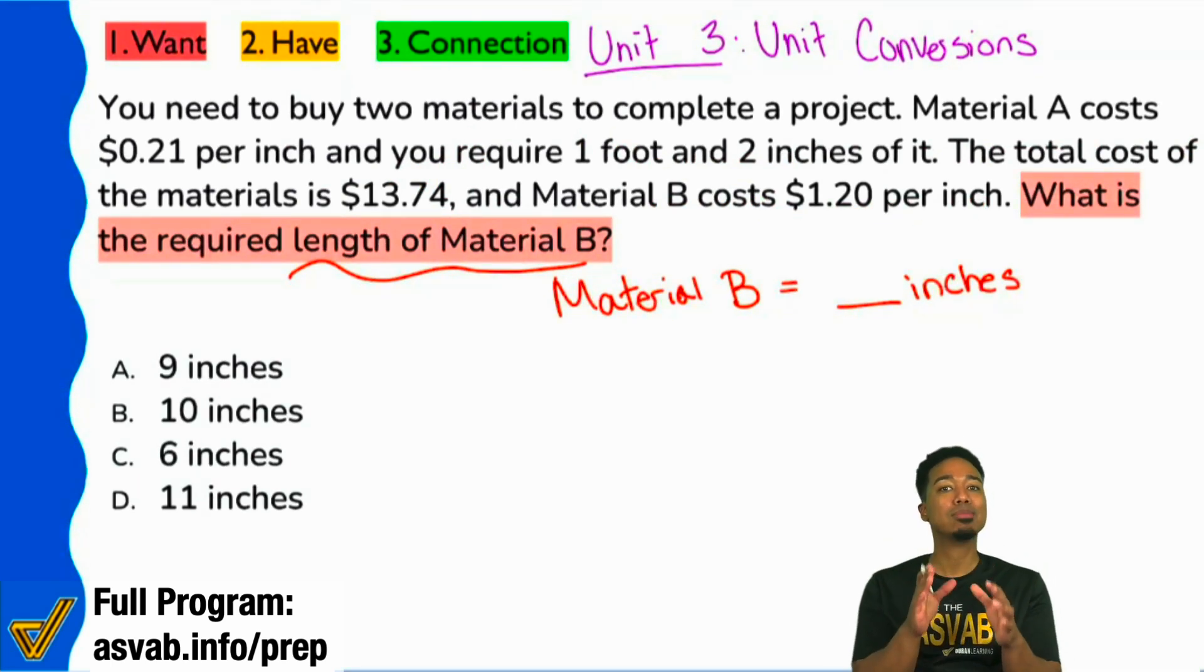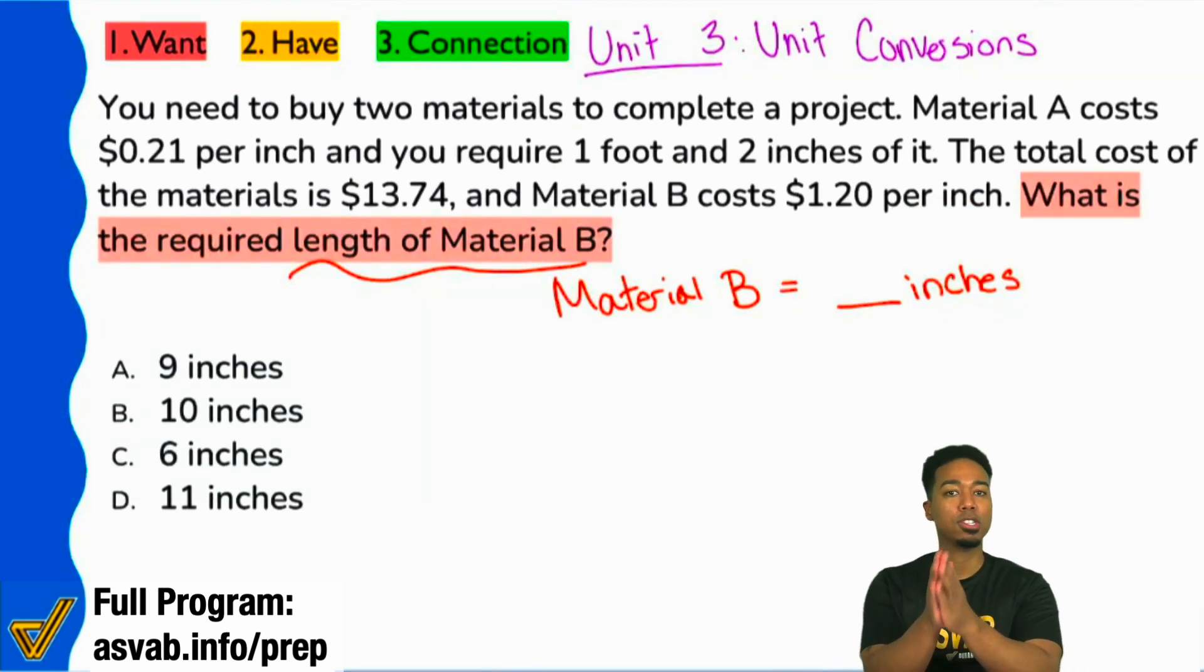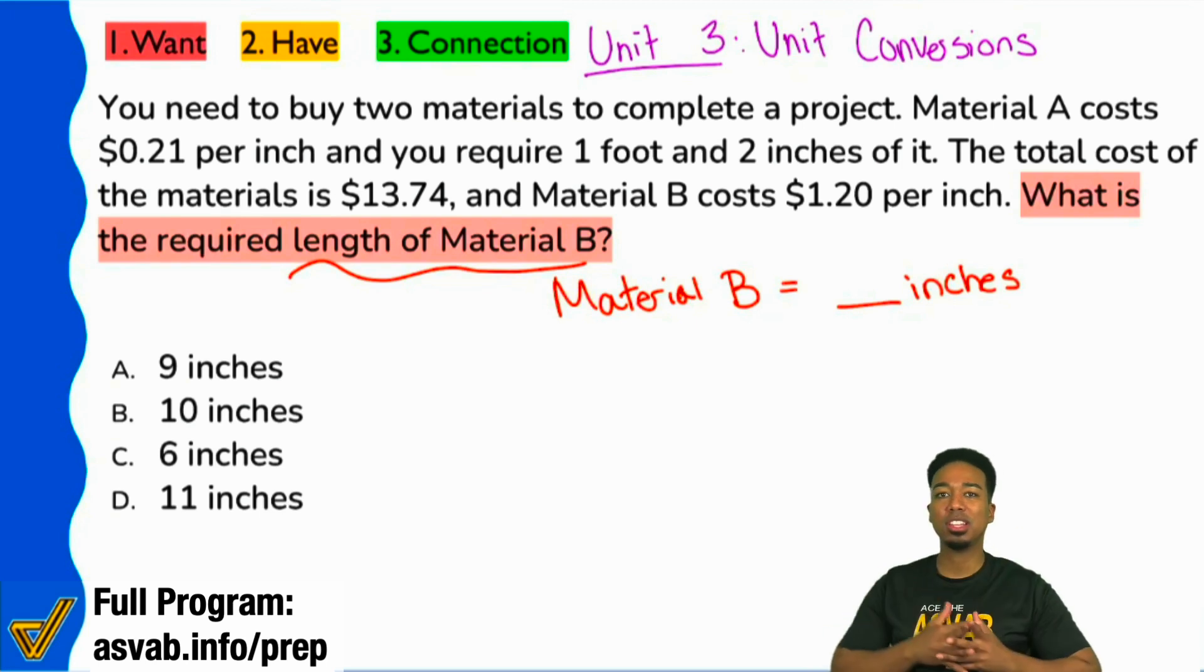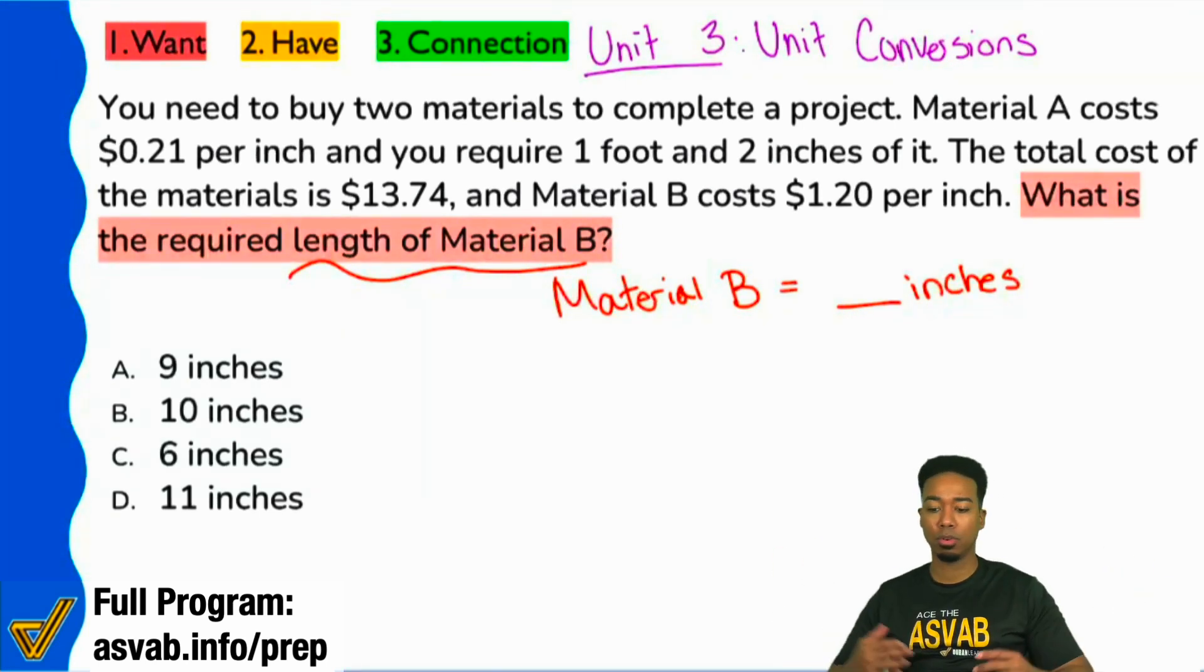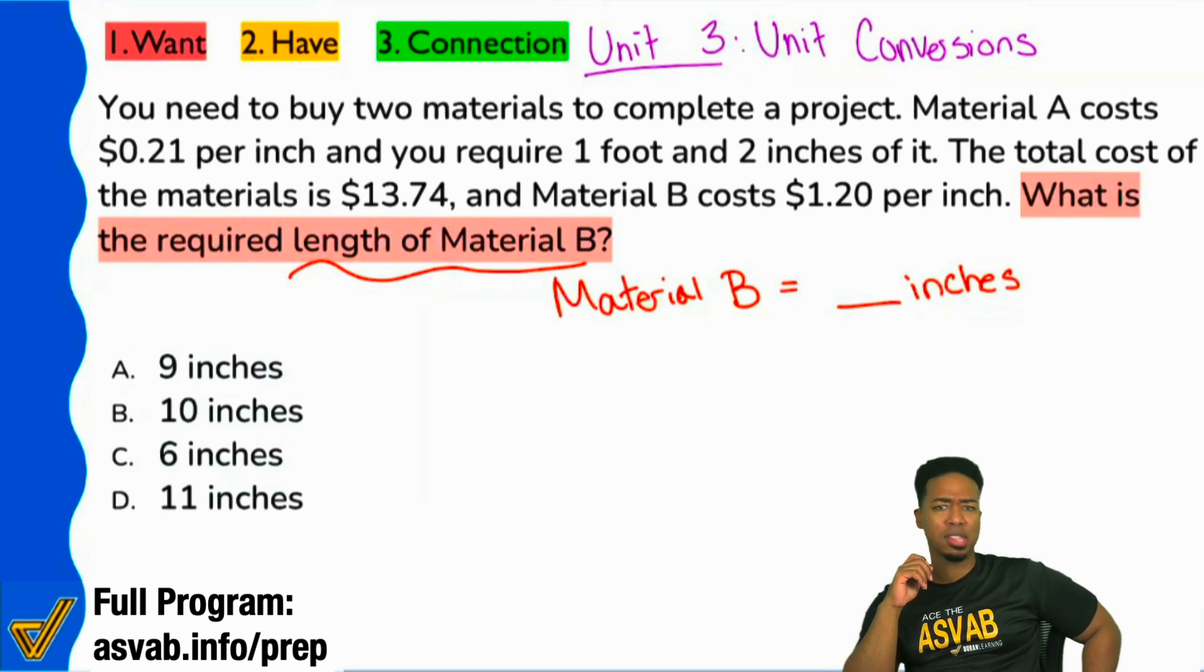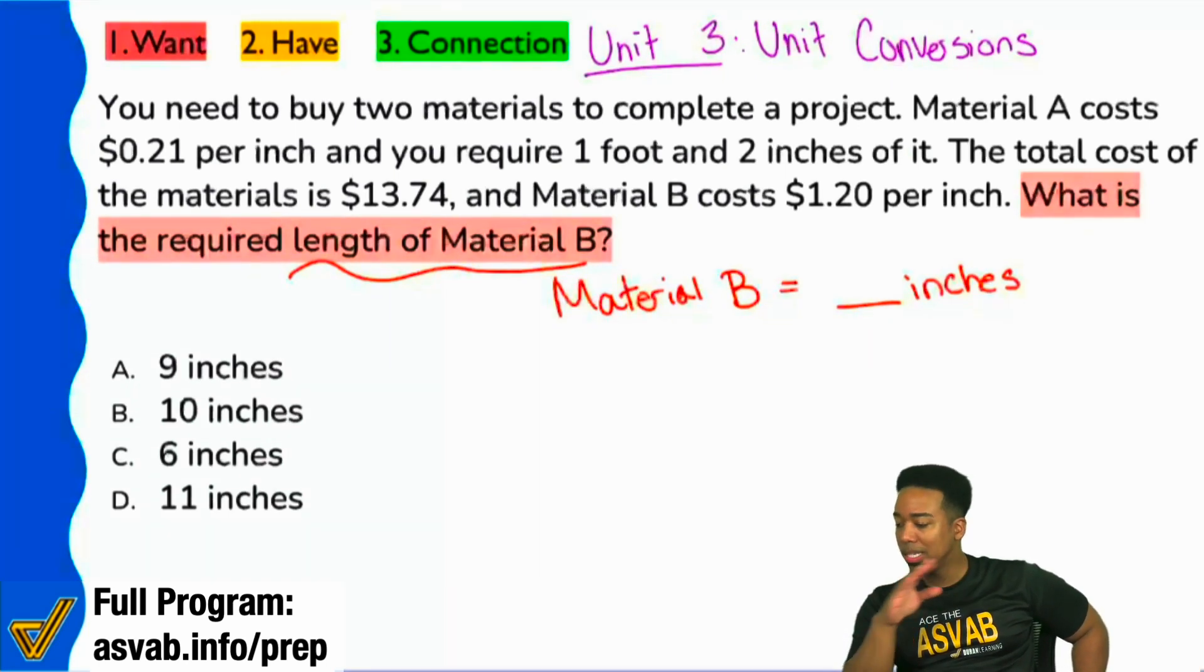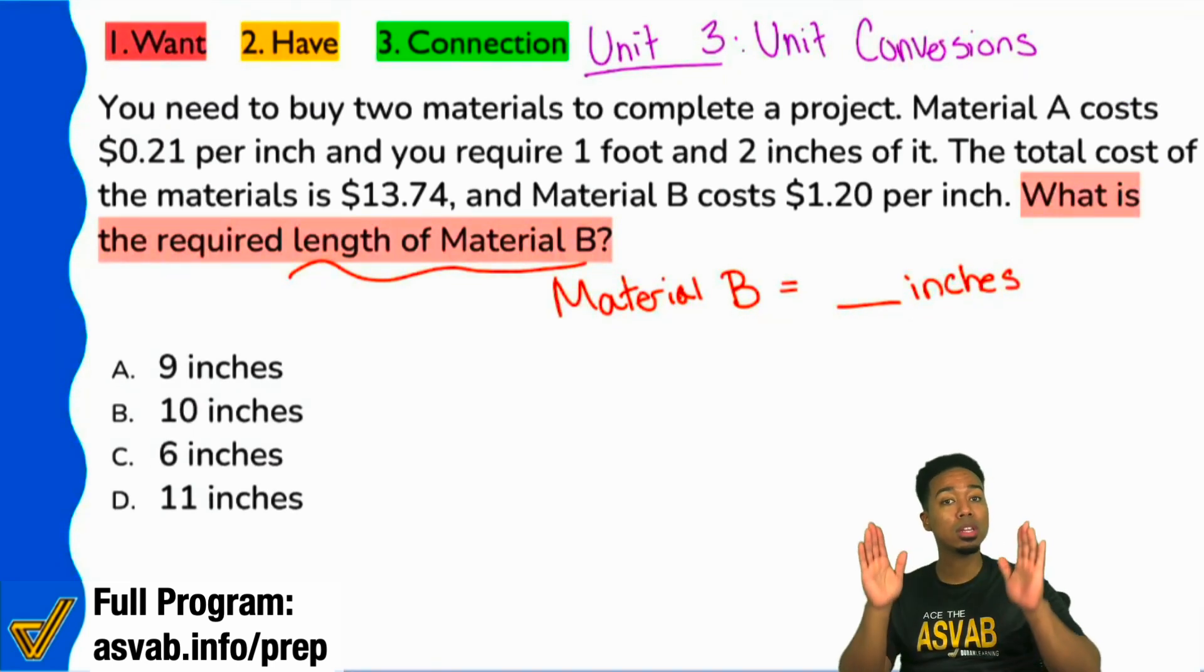I know that this seems like a lot. I know this can feel overwhelming and I want to just see who feels the same way. Who here felt, after reading the information, after reading all those numbers, who here felt overwhelmed at this specific point? Yeah, I know that I'm looking for material B's length, but there's so much information that I don't know where to go. Natural, right? It's a natural feeling, a completely natural feeling.